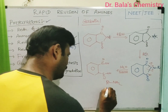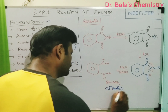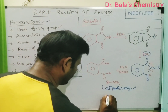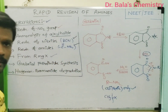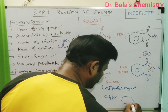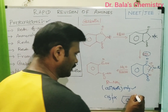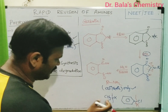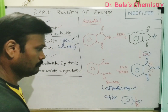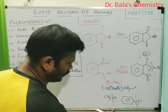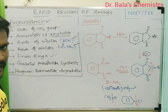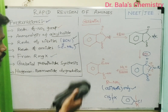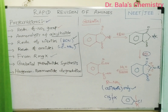Why can't Gabriel synthesis prepare aromatic amines? Only aliphatic primary amines are formed. The reason is that when R is an alkyl group (like CH3), the C-X bond is easy to break. But if we use chlorobenzene, the C-X bond is very tough to break because of partial double bond character (resonance between the ring and C-Cl bond). That's why only aliphatic amines, specifically primary amines, can be prepared by Gabriel phthalimide synthesis.